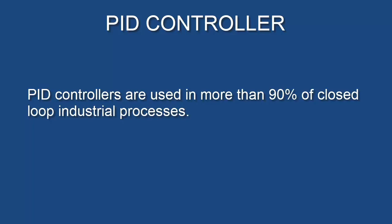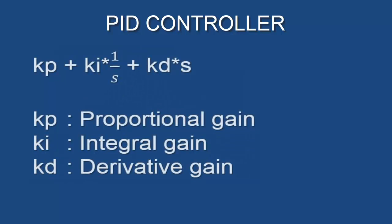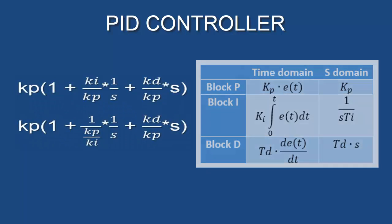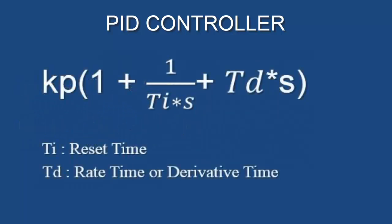PID controllers are used in more than 90% of closed-loop industrial processes. As we already discussed, the mathematical equation of the PID controller is defined by KP·E + KI·(1/S) + KD·S, in which KP represents proportional gain, KI integral gain, and KD derivative gain. Modified, we get KP·E·(1 + 1/(TI·S) + TD·S), in which TI is reset time and TD represents derivative time or rate time.